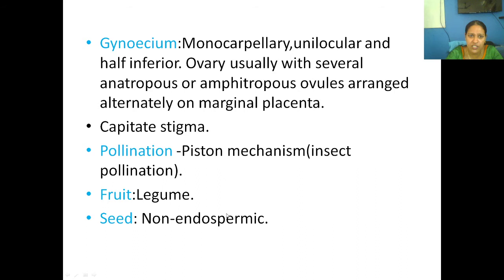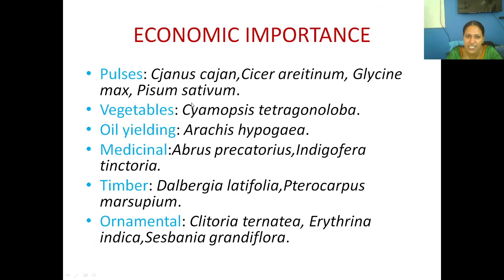Pollination is by insects. The fruit is a legume. The economic importance of this plant family — Papilionoideae — includes pulses, vegetables, oil-yielding plants such as groundnut (Arachis), medicinal plants, timber-yielding plants, and ornamental plants such as Clitoria.